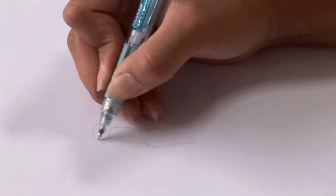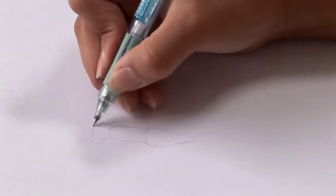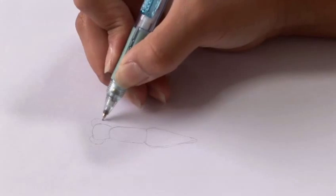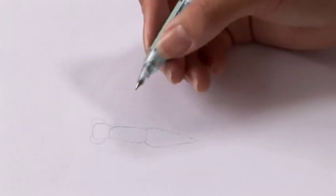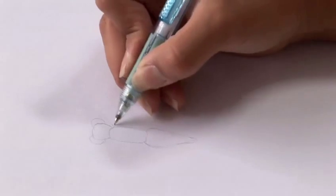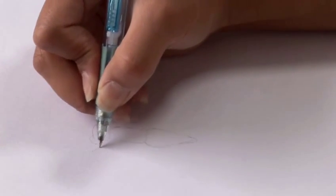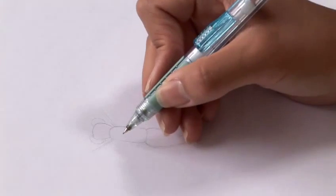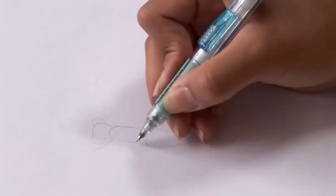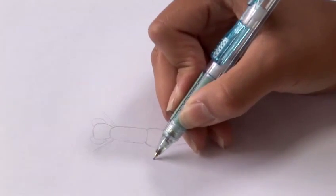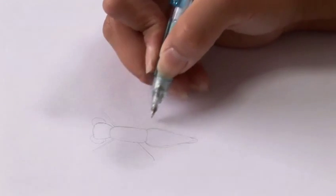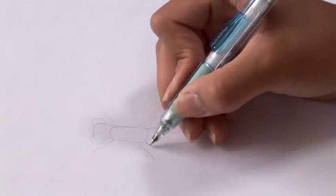And then I'm going to place in the eyes. And then I'm just going to roughly draw out where the arms and legs will be, or the other legs. The second set of legs, and then the third.